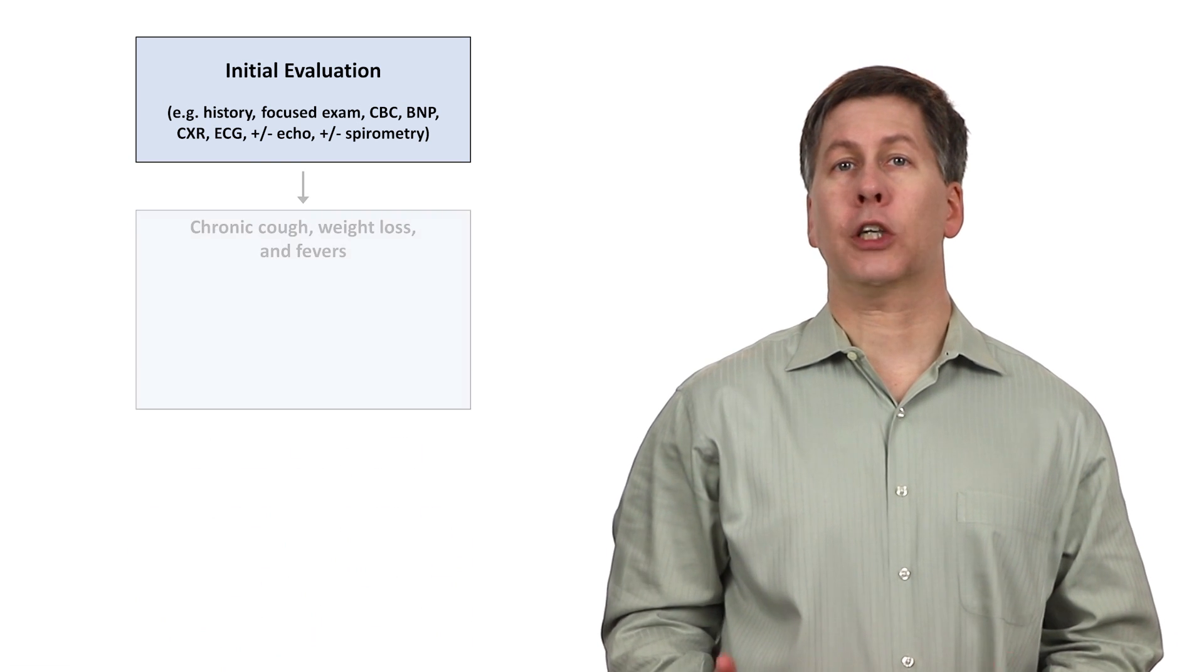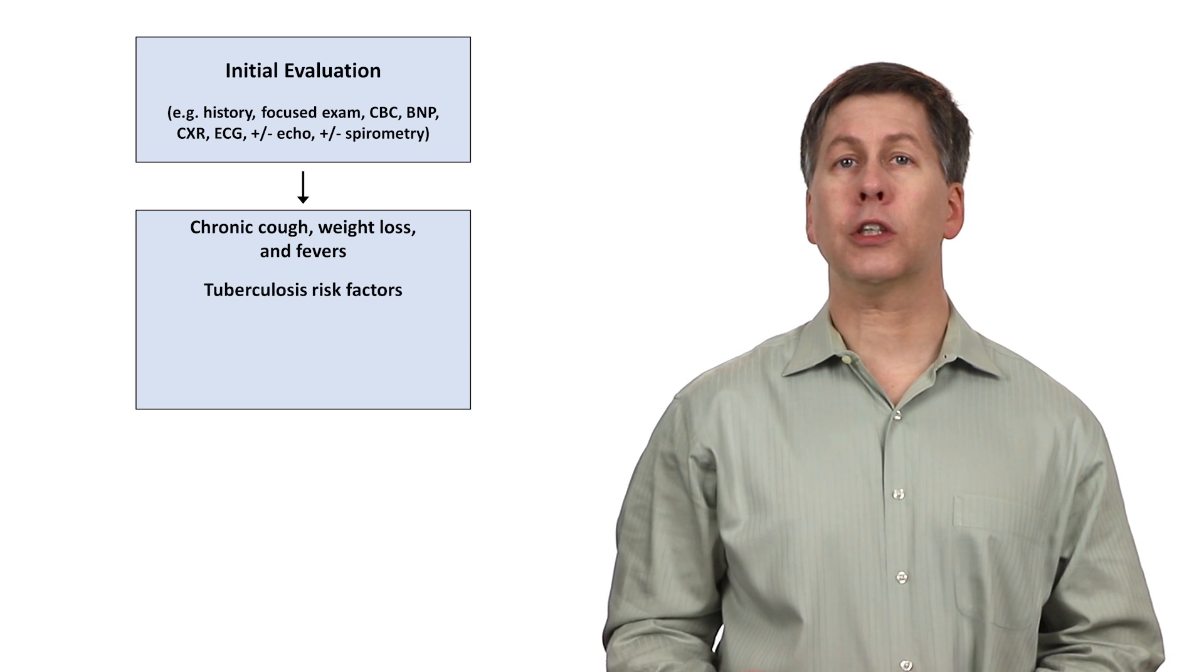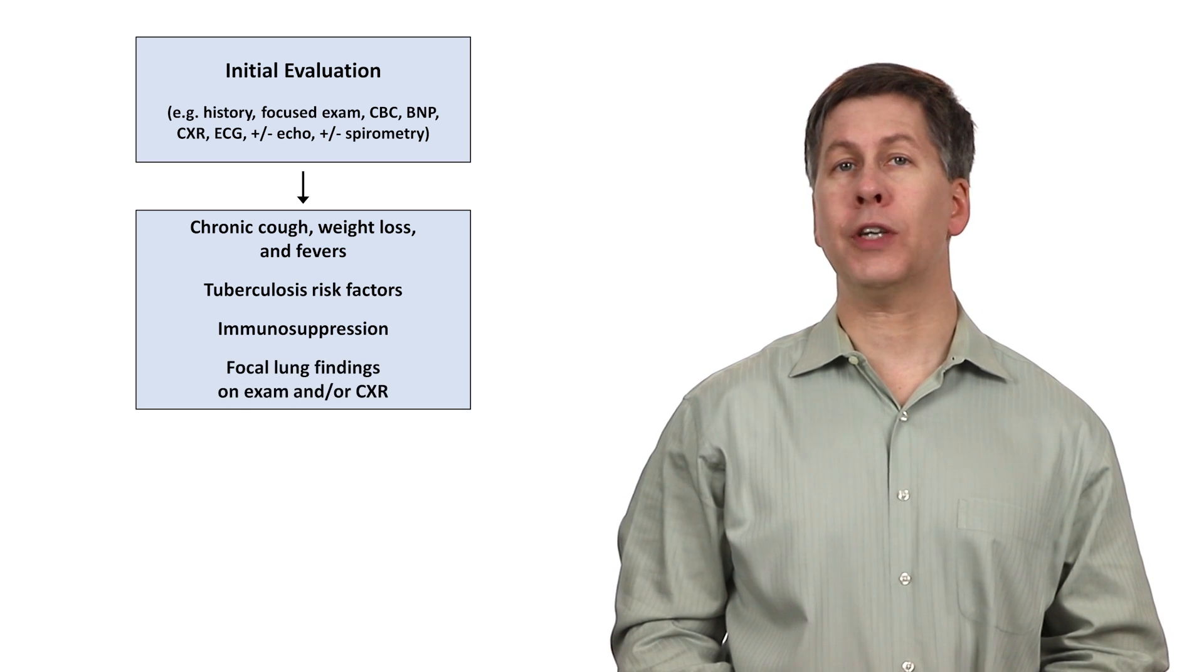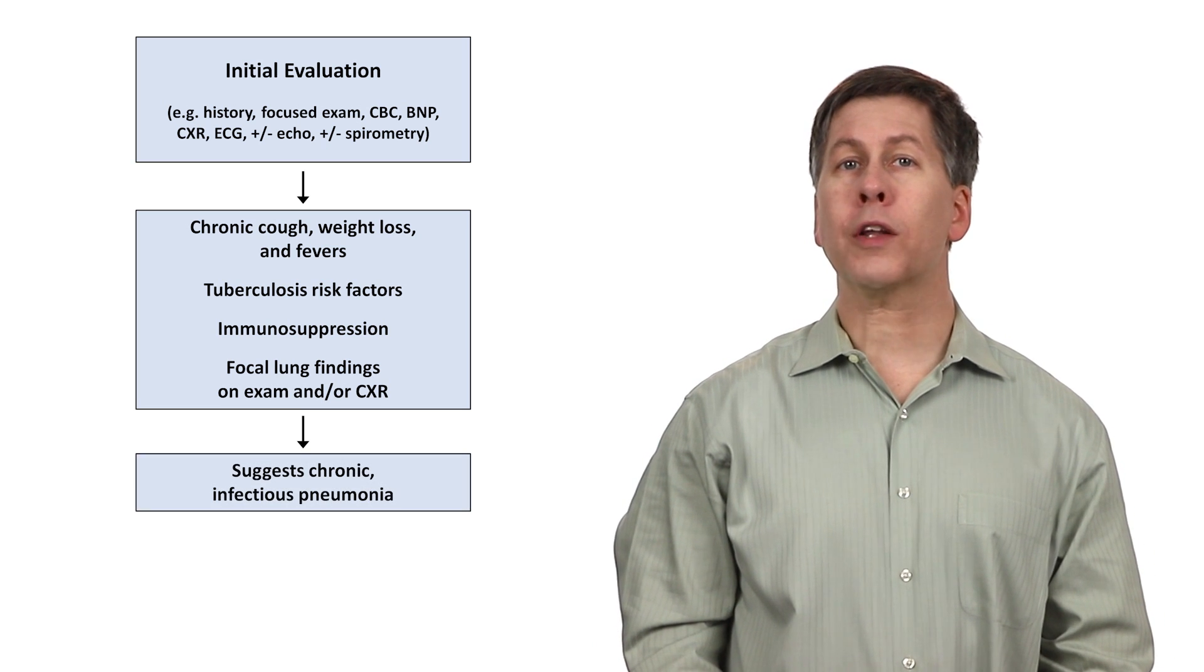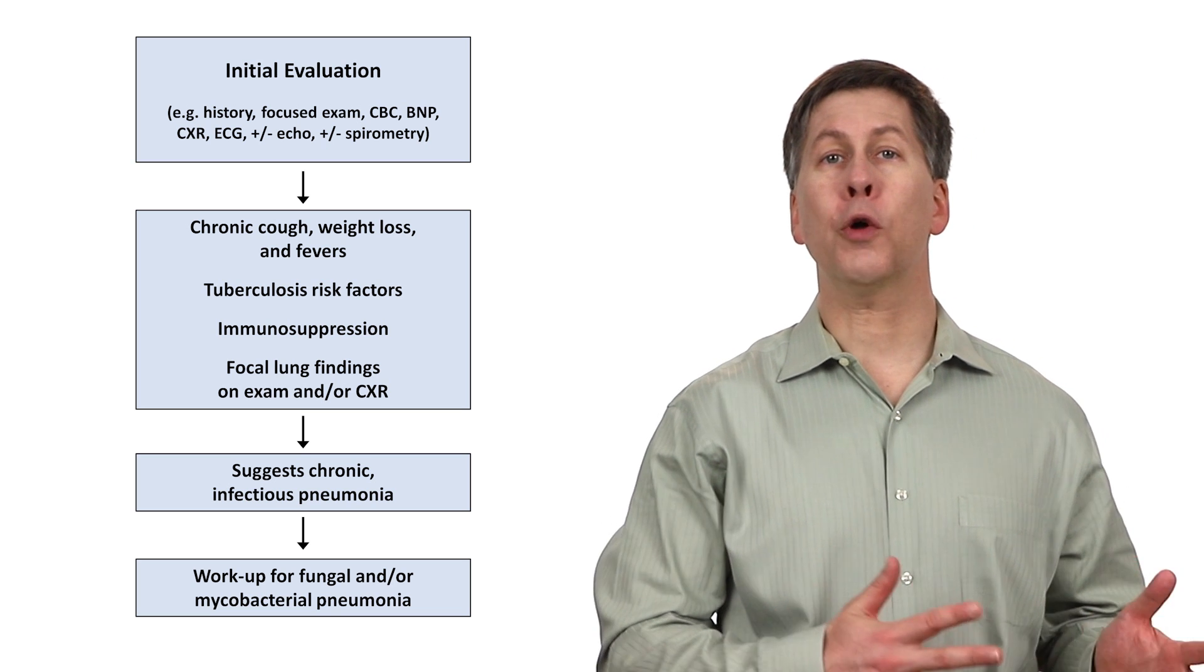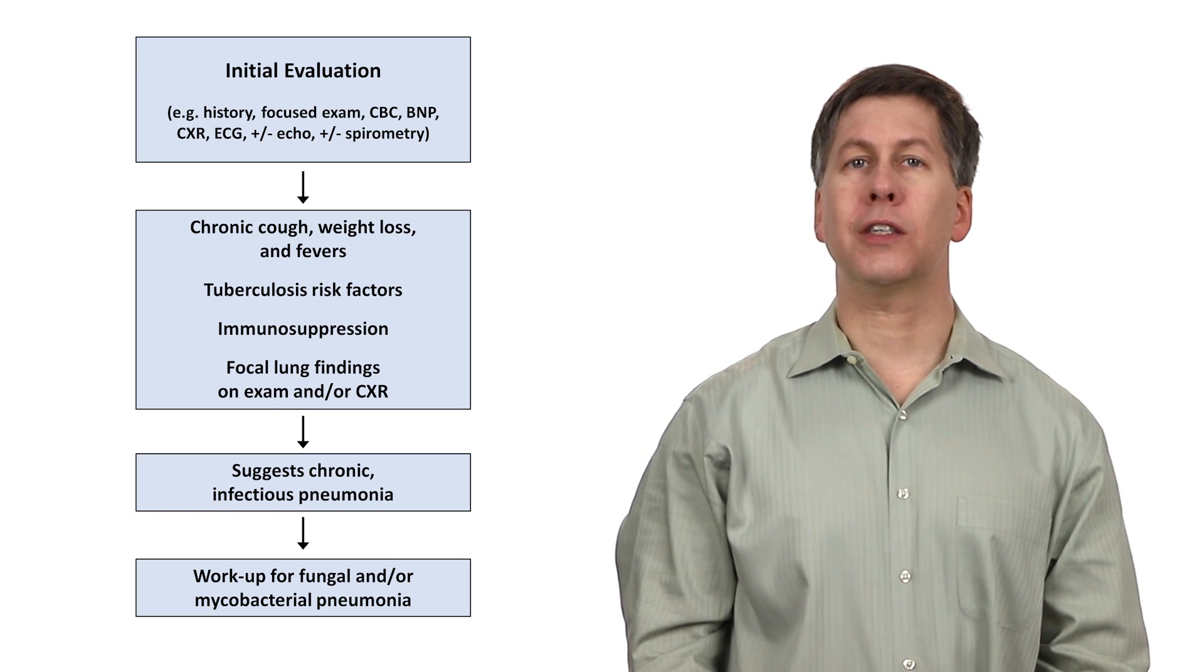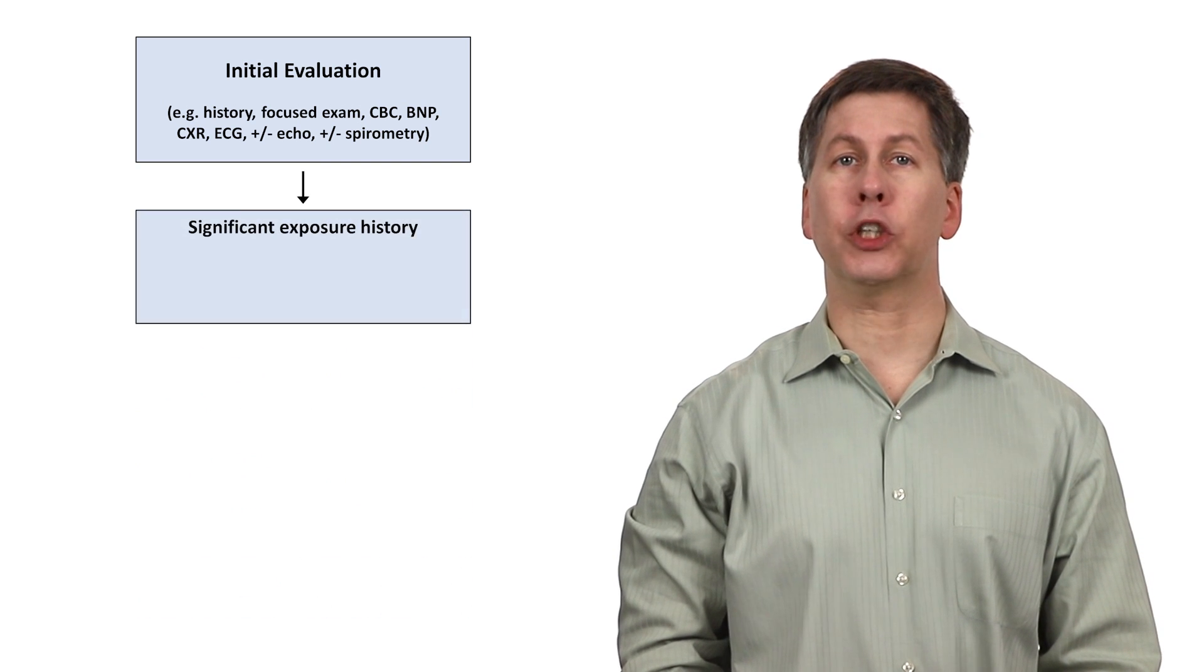If the patient has a chronic cough, weight loss, and fevers, has tuberculosis risk factors, is currently immunosuppressed or has been recently, and has focal lung findings on exam and or the chest x-ray, consider chronic infectious pneumonia. Whether you work them up for a fungal infection, mycobacterial infection, or both, will depend upon the patient's risk factors for each and the specific radiographic pattern, for which a chest CT is sometimes ordered.